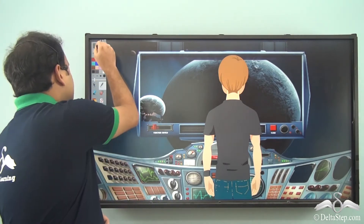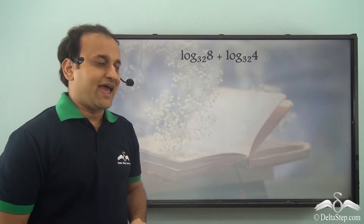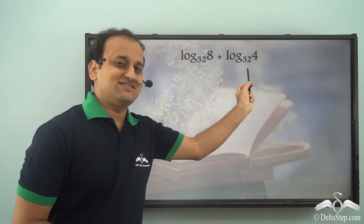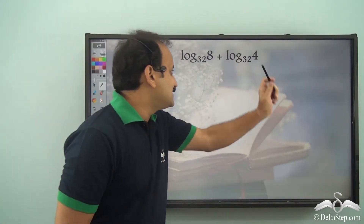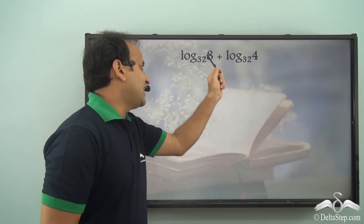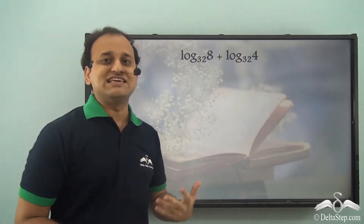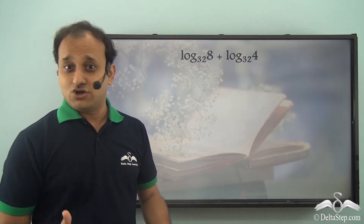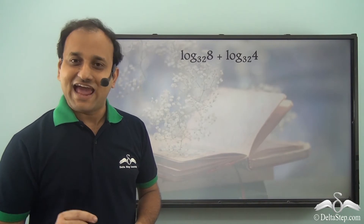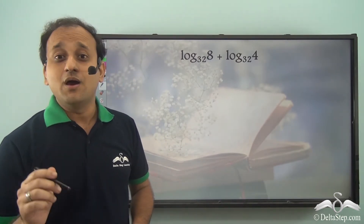The initial speed was log 8 to the base 32, and the additional engine's speed is log 4 to the base 32. Adding these was difficult because the base is 32 while the arguments 8 and 4 are not powers of 32. Sam was worried since he had to solve it quickly without a calculator. He called Shyam, a senior scientist at the space station, who told him this sort of problem can be solved using the product law.